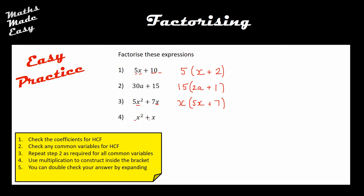Question four: there are no coefficients, so I move straight to step 2. There are x's common to both terms, so an x comes out the front. What do I times by x to make x²? x. And similarly to question two, what do I times by x to make x? The answer is just 1. So that's what the fully factorized version looks like. Well done if you got all four correct — there were some tricky ones.